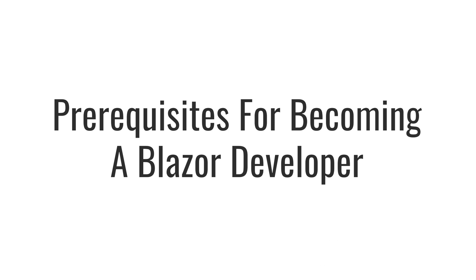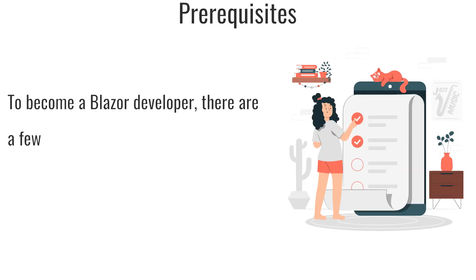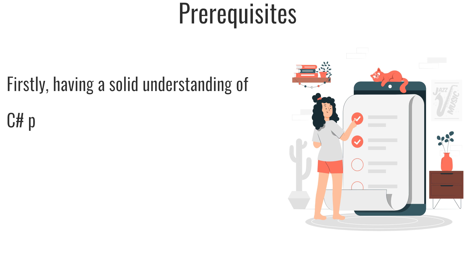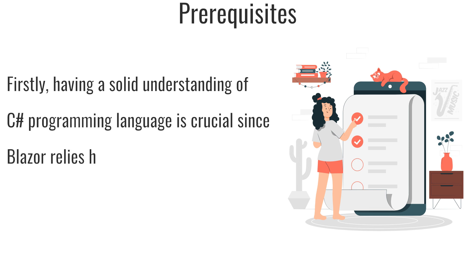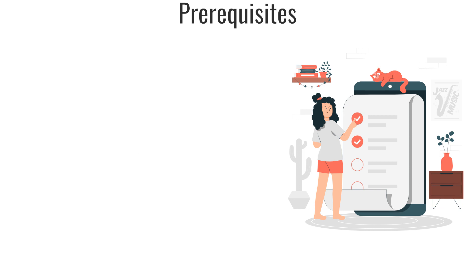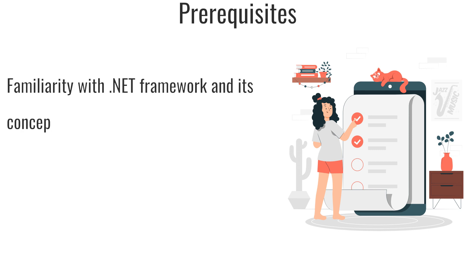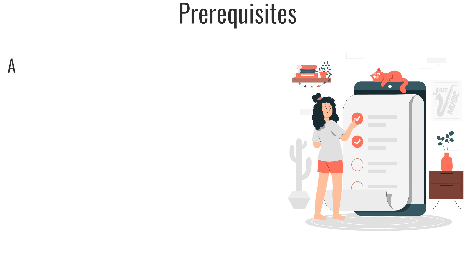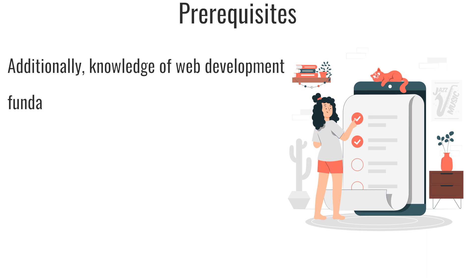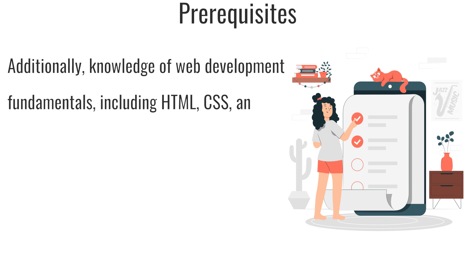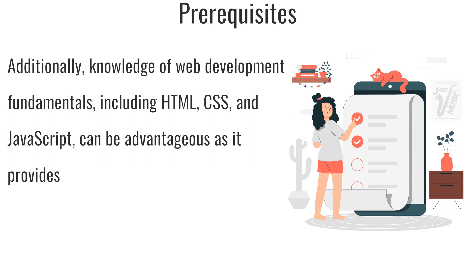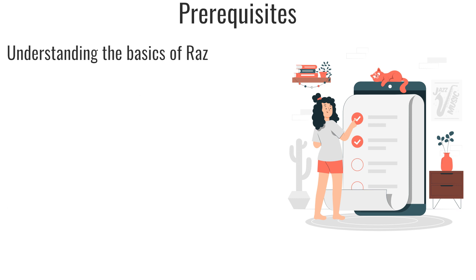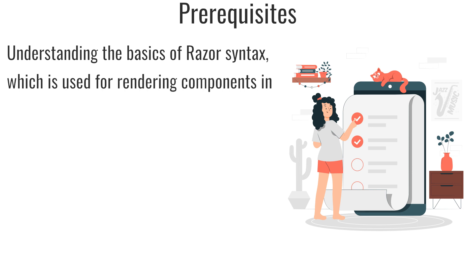Prerequisites for becoming a Blazor developer: To become a Blazor developer, there are a few prerequisites to help you get started on the right path. Firstly, having a solid understanding of C# programming language is crucial, since Blazor relies heavily on C# for application development. Familiarity with the .NET framework and its concepts, such as classes, inheritance, and object-oriented programming, is also beneficial. Additionally, knowledge of web development fundamentals, including HTML, CSS, and JavaScript, can be advantageous. Understanding the basics of Razor syntax, which is used for rendering components in Blazor, is essential.